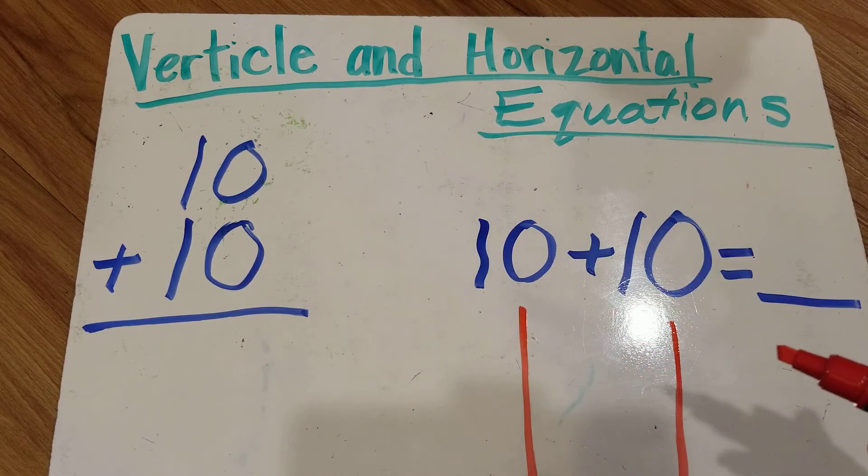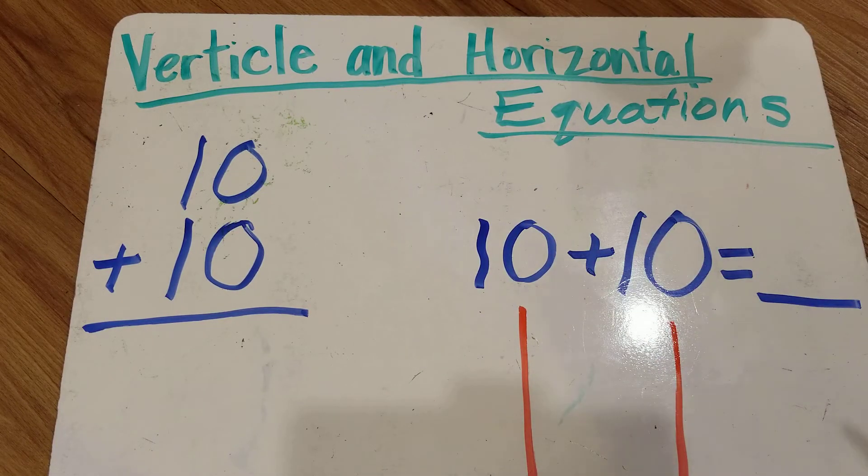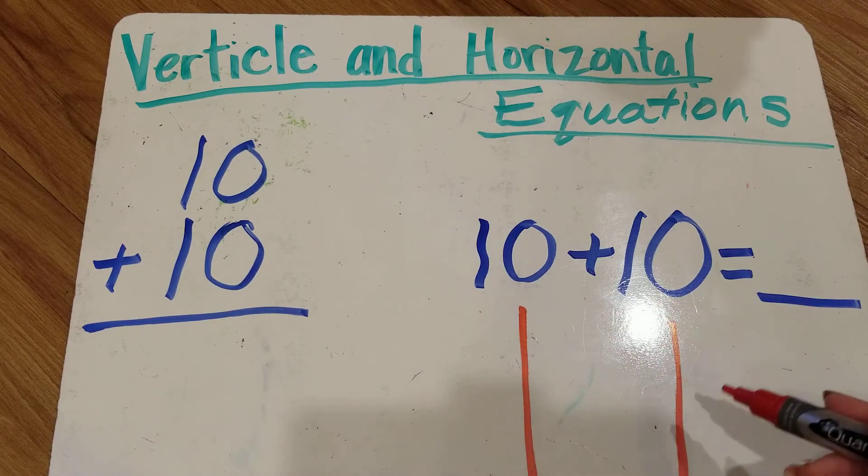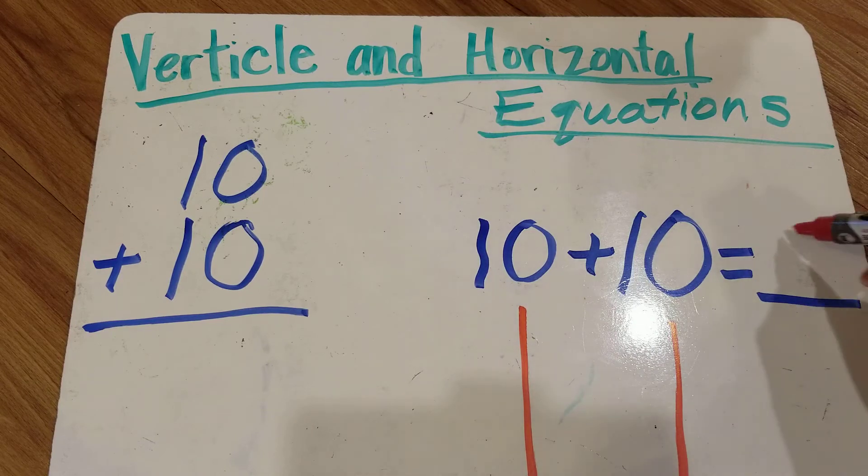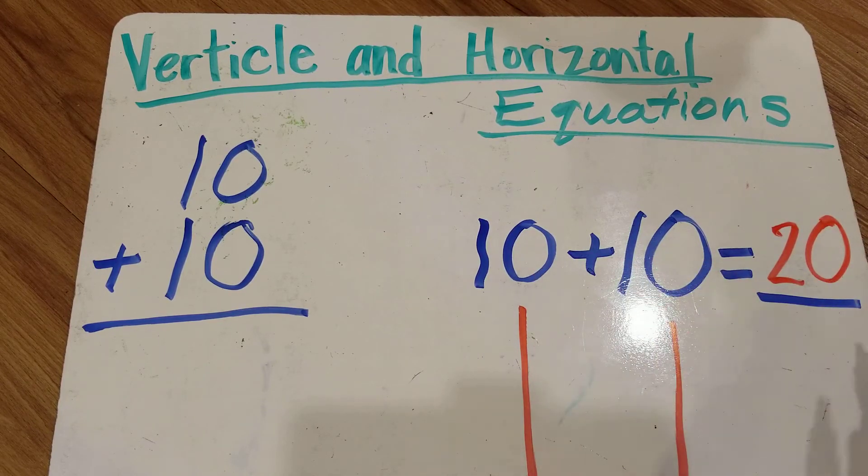Remember when we used our hundreds chart? 10, 20, 30, 40, 50, 60, 70, 80, 90, 100. We do that same thing with adding tens. 10, 20. We put the answer in the blank. We're really familiar with horizontal equations.